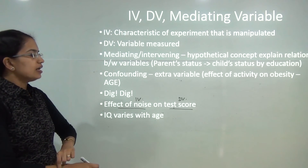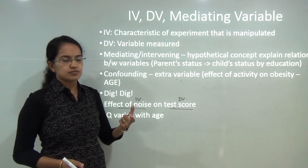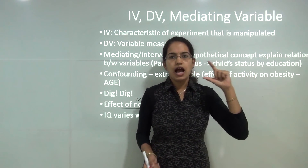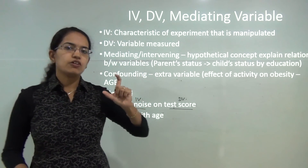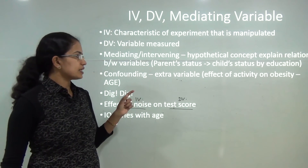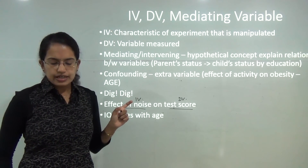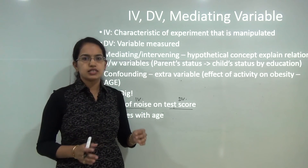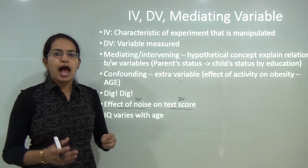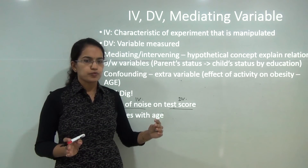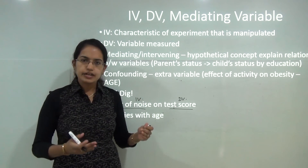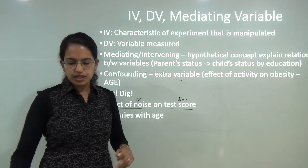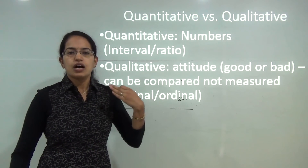Moving to mediating and intervening variables, there is an interesting example. It is a kind of hypothetical concept that you try to introduce. Parents' status ultimately reveals a child's status, and that is underlaid by the level of education — so the level of education becomes the intermediate or mediating variable. Similarly, hunger is a hypothetical construct that shows a relationship between the amount of food consumed and the length of time one can remain without food. The amount of food consumed is the dependent variable, the duration without food is the independent variable, and hunger becomes the mediating variable.